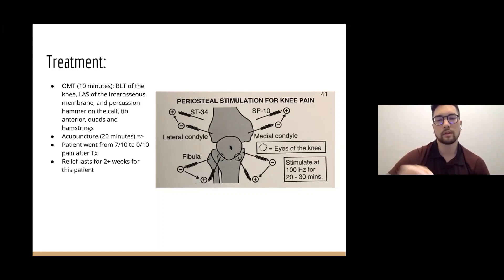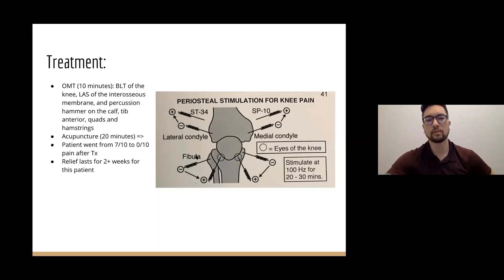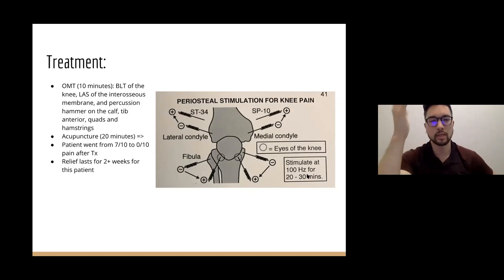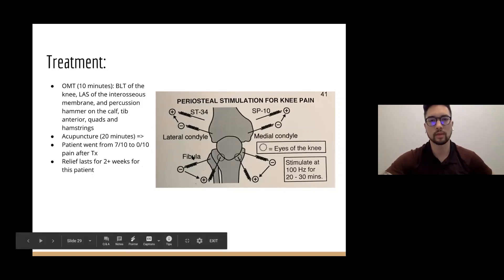For periosteal knee stimulation for acute knee pain, using points ST34 and SP10 — Stomach 34 and Spleen 10 — I would do OMT for about 10 minutes, balance out the anatomical structures of the knee, allow ligaments to relax, work on muscular attachments perhaps using a Hypervolt or soft tissue techniques. Then acupuncture on the knee with this setup. You always want to use a negative current on a periosteal point because it delivers more electrons to that tissue. After 20 minutes at 100 hertz, the patient went from 7 out of 10 to 0 out of 10, and the relief lasts about 2-plus weeks.